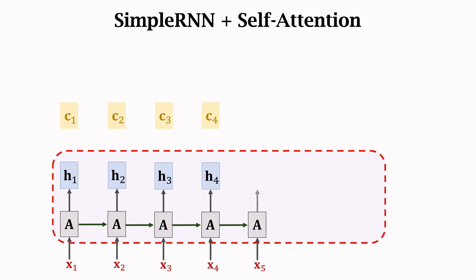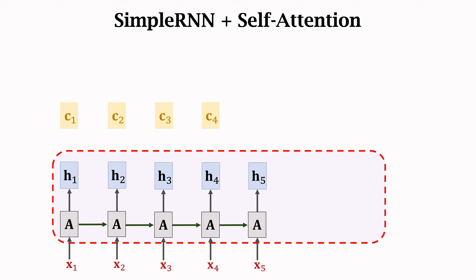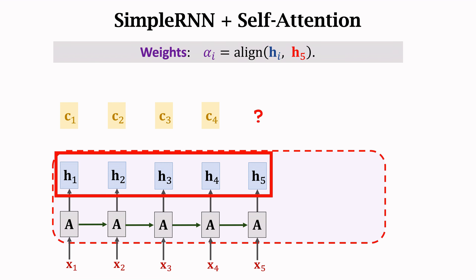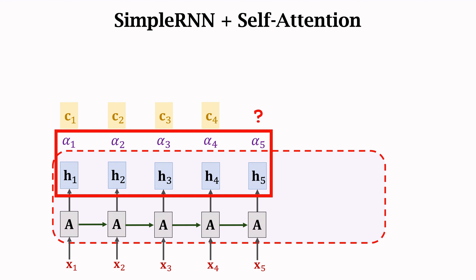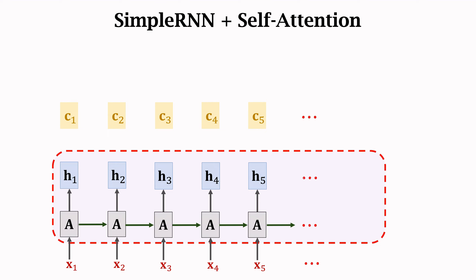Repeating again, the new state H5 is computed by this equation. H5 is a function of the new input x5 and the previous context vector C4. We then compute a new context vector by comparing H5 with all five states H1 to H5. We get five weights alpha_1 to alpha_5, each corresponding to a state H. The new context vector C5 equals alpha_1·H1 + alpha_2·H2 + ... + alpha_5·H5. Repeat this process to the end of the input sequence. Each time, after taking an x vector as input, we compute a new state H and then a new context vector C.